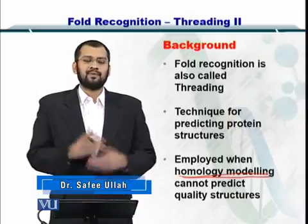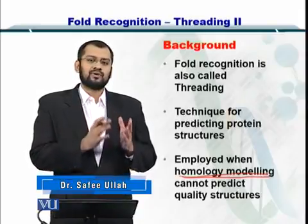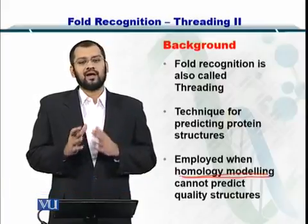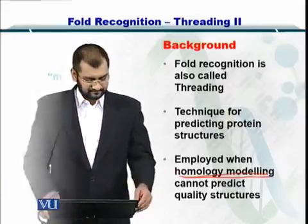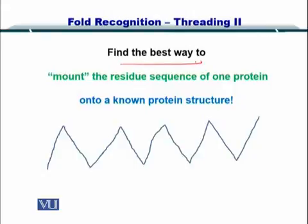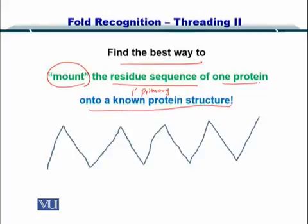So what happens in that case, we move towards the twilight zone where we have a low identity and a low alignment. So here let's work on an example to find the best fold for a sequence. The best way to find that is to mount the residue sequence — that is, the primary sequence of a protein — onto a known protein structure.